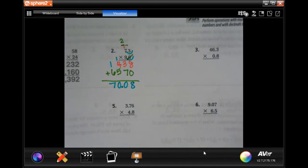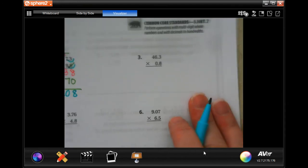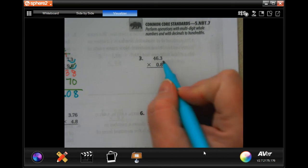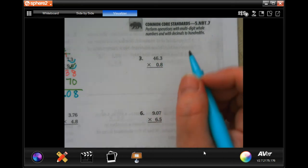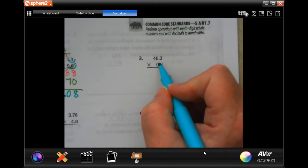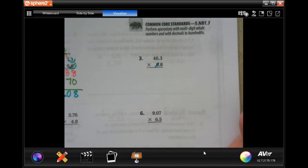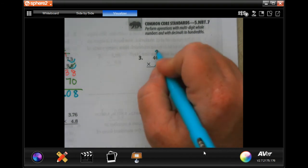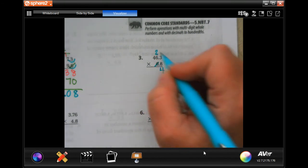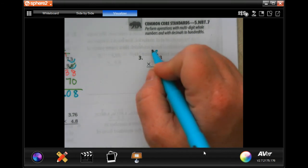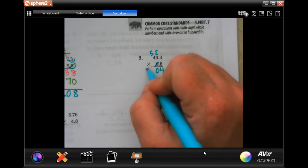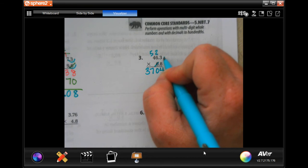All right, number three. It's going to look tricky because there's now three numbers up top, but it's still the same process. Actually this one's less of a process because you don't have to multiply by zero. Eight times three is twenty-four. Eight times six is forty-eight, plus two is fifty, carry our five. Eight times four is thirty-two, plus five is thirty-seven. Now one, two places, one, two places: thirty-seven point zero four.